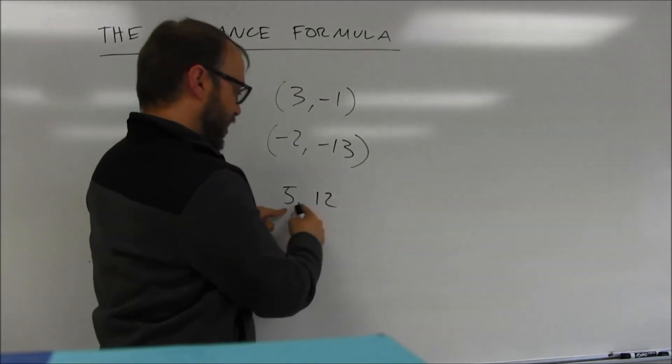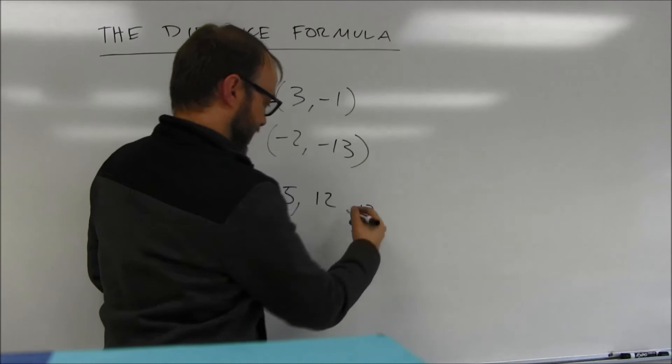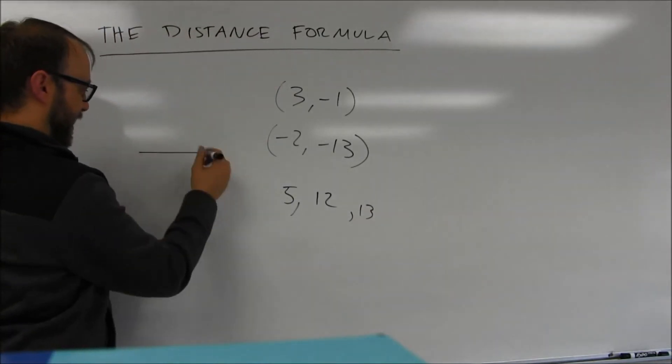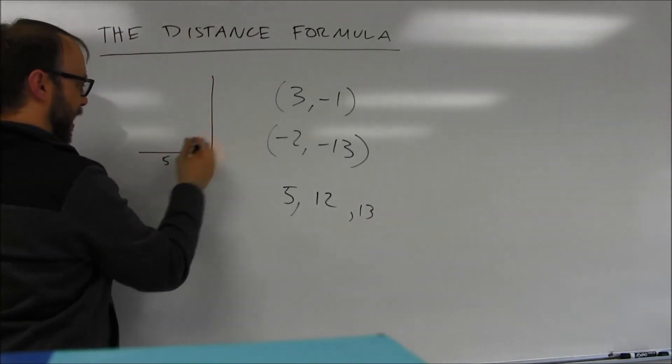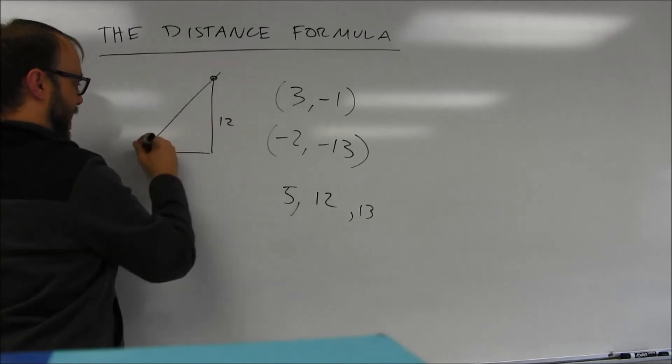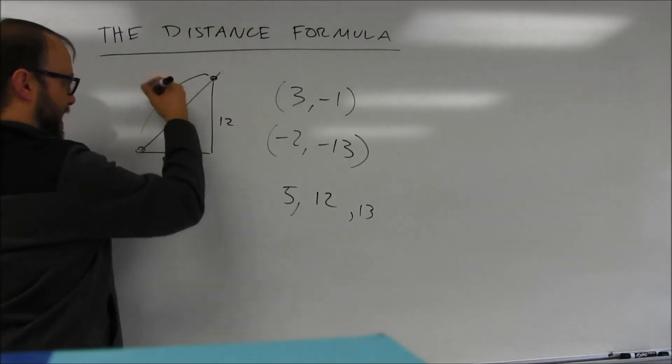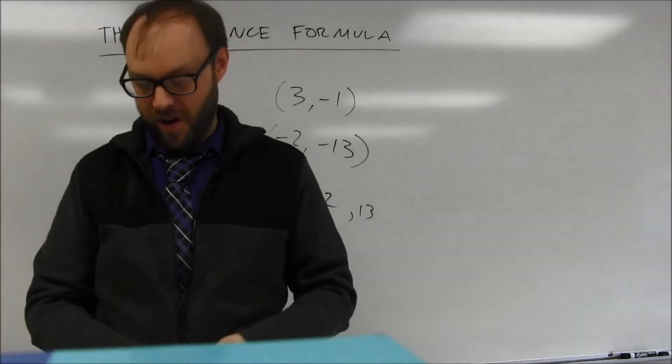This is a 5, 12, 13 triangle. If you drew it, you'd have a side length of 5, and you'd have a side length of 12, and your hypotenuse length would be 13 between them. That's all that's going on.